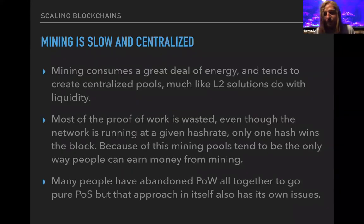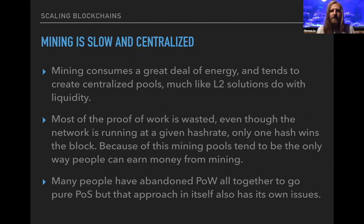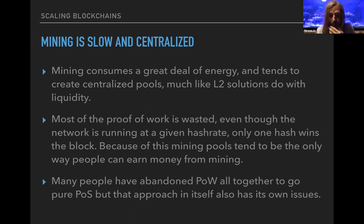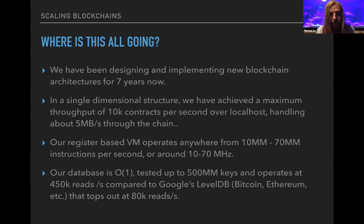Mining is slow and centralized — it creates a centralized arms race, consumes great energy, and tends to create centralized pools. Most proof of work is wasted: even though the network runs at a given hash rate, only one hash wins. Mining pools become the only viable way for people to earn money from mining. Many have abandoned proof of work altogether for pure proof of stake, but that approach has its own issues as well.